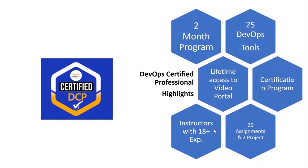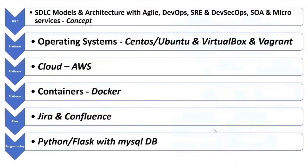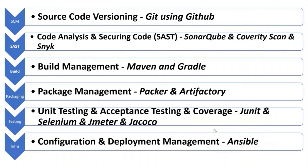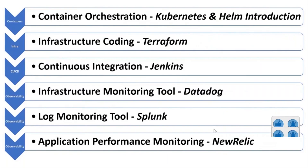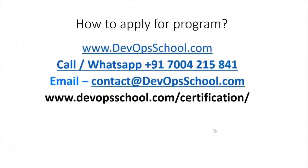You'll have 25 assignments and two projects along with it. It's a completely weekend program with classes on Saturday and Sunday. As part of this course you will learn Linux, AWS, Docker, Jira, Confluence, Python, Git with GitHub, SonarQube, Maven, Gradle, Packer, Artifactory, Selenium, JMeter, Ansible, Kubernetes, Helm, Terraform, Jenkins, DataDog, Splunk, and NewRelic.